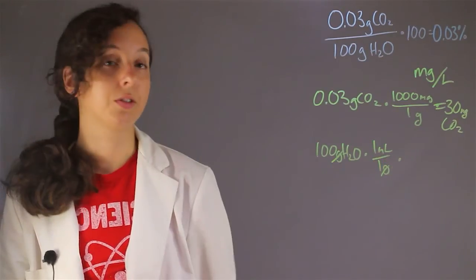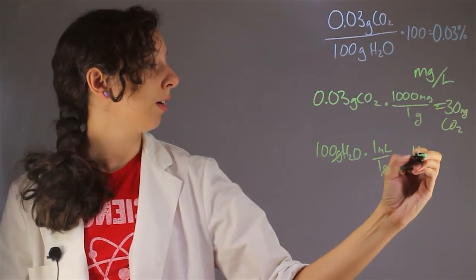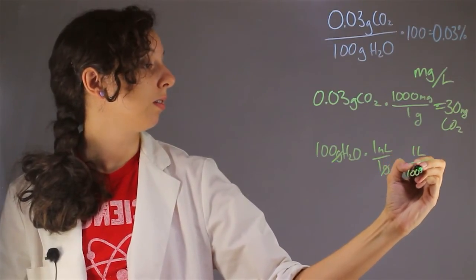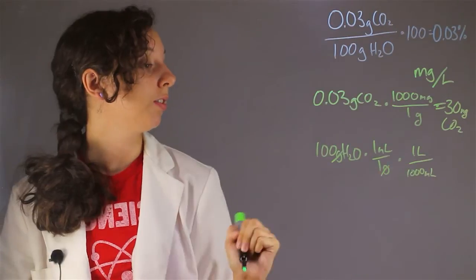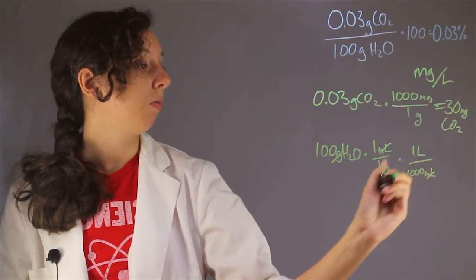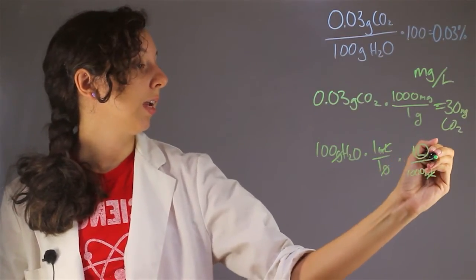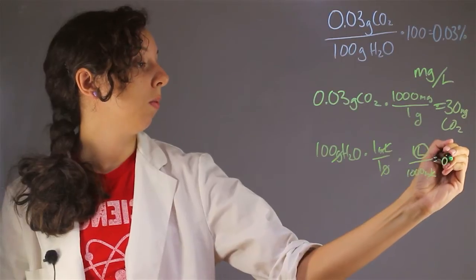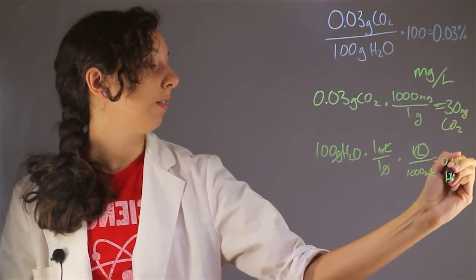And now let's convert to liters. So for every one liter, you have 1,000 milliliters. So units cancel out. We know we're going to end up in liters. And we get 0.1 liters of H2O.